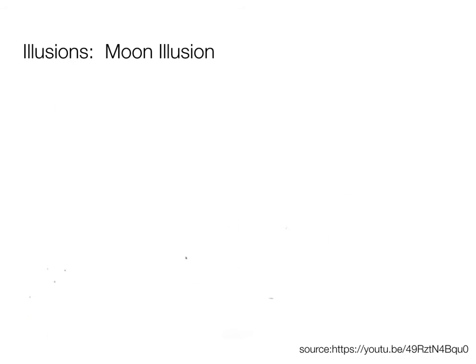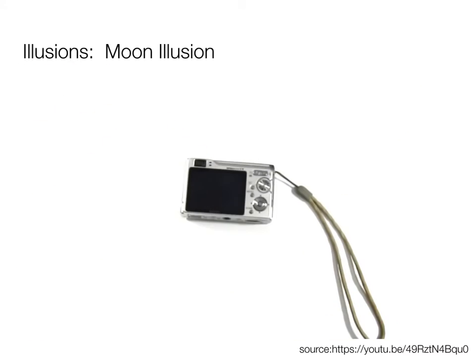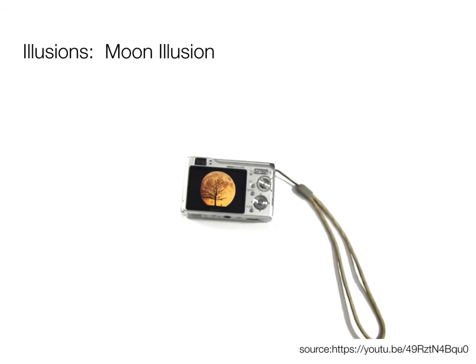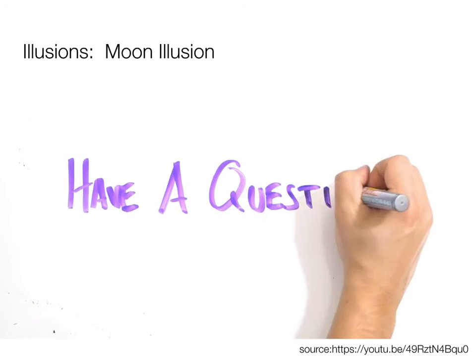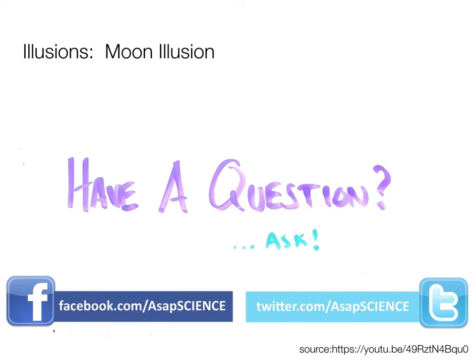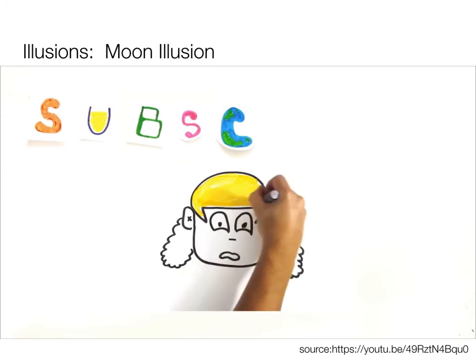Still not convinced? Try bending over and looking through your legs at the horizon moon — the effect is gone because upside-down trees and buildings don't register as familiar objects and your depth perception isn't confounded. Or, for the less flexible, take a photo of both moons. Your camera won't suffer any optical illusions and you can clearly see the moon is the same size.